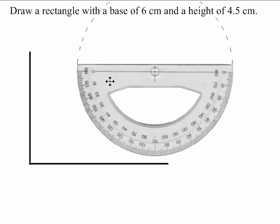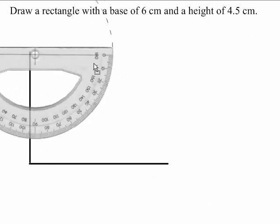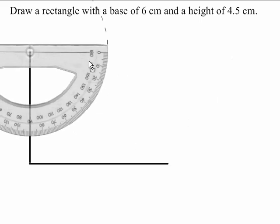At the top of the upright line, I use a protractor to draw another 90 degree angle. I make this one 6 cm long.